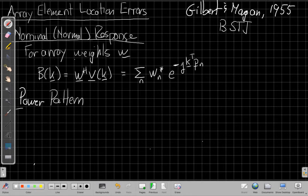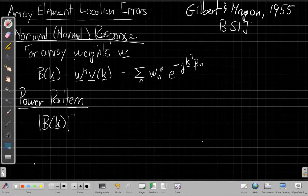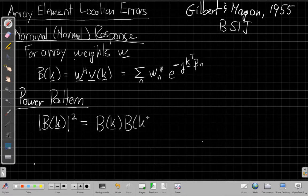So again, the nominal or ideal version is just a beam pattern that often operates in voltages or pressure in Pascal. The power pattern is related to the square of that, so it's the magnitude squared of B of K. One easy way to find the magnitude squared is to multiply it by its conjugate. So now we can write this out as two sums, the product of two sums.